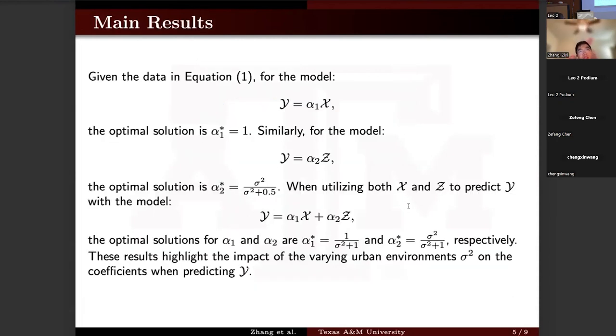Next, we will present some theoretical insights about why the geographical domain shift will affect the model parameters. Given equation 1, for the model Y equals alpha_1 X, the optimal solution for alpha_1 is 1. And for the model Y equals alpha_2 Z, the optimal solution is related to the value of sigma. If we use both X and Z to predict Y,